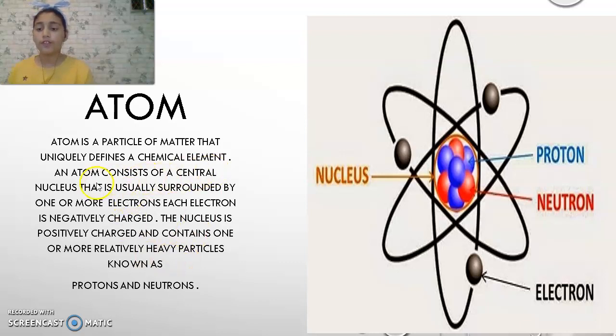An atom consists of a central nucleus that is usually surrounded by one or more electrons. Each electron is negatively charged. The nucleus is positively charged and contains one or more relatively heavy particles known as protons and neutrons. Here, as you can see, inside this yellow circle, the yellow circle and the things inside it is the nucleus.